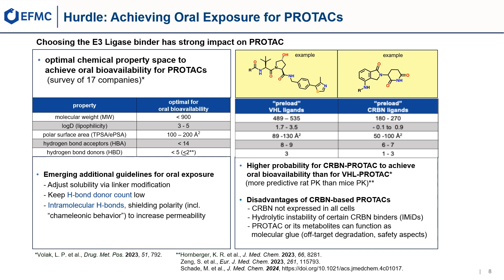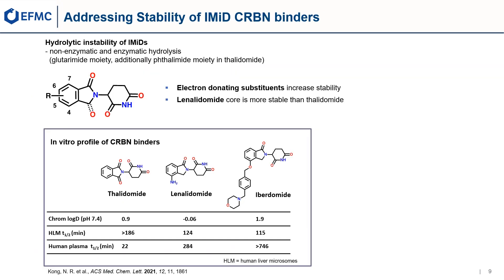In the next slides we will deal with a few disadvantages of CEREBLON-based PROTACs, especially in regard to stability and safety aspects. One disadvantage of CEREBLON ligands is the hydrolytic instability of the IMID pharmacophore in vivo; its hydrolysis to ring-open acidic derivatives can be of enzymatic or non-enzymatic nature. Additionally, hydrolysis of the phthalimide moiety of thalidomide has been observed. It was found that electron-donating substituents on the phenyl ring increase hydrolytic stability in plasma, especially for molecular glues of the isoindoline type such as lenalidomide or iberdomide. Thus substituted lenalidomide-based PROTACs might have sufficient hydrolytic stability.